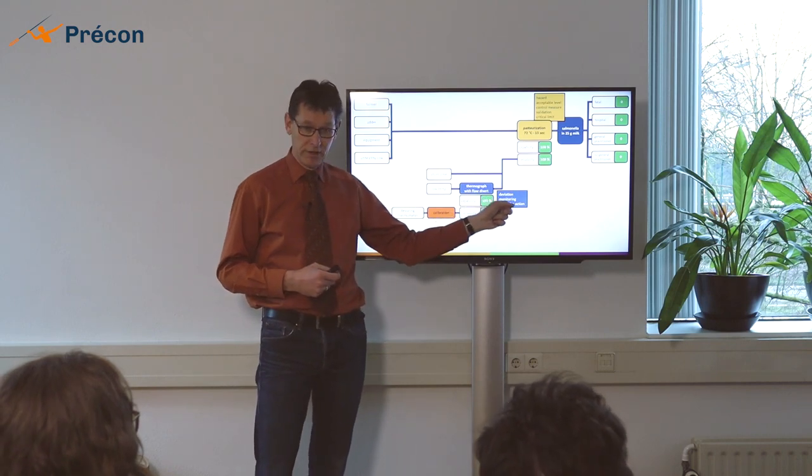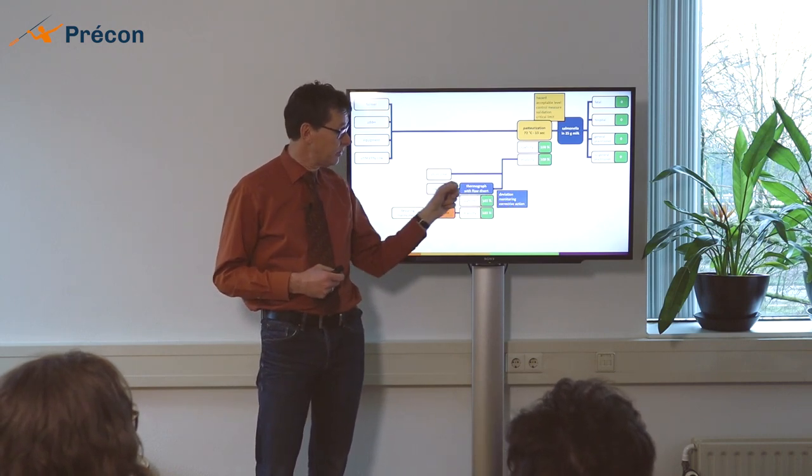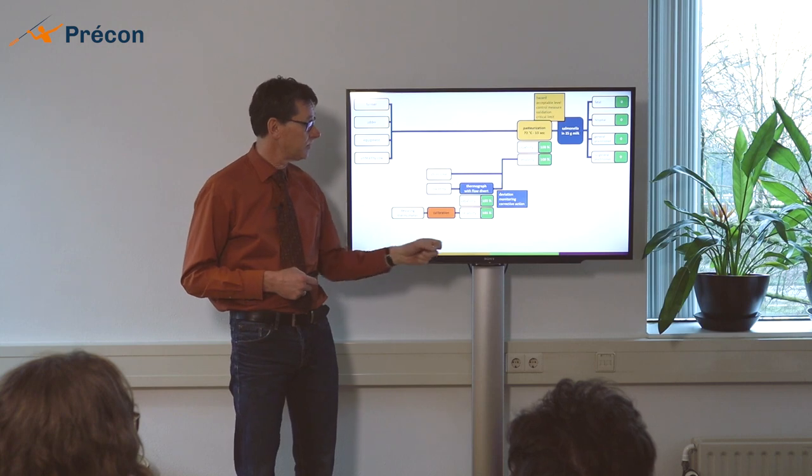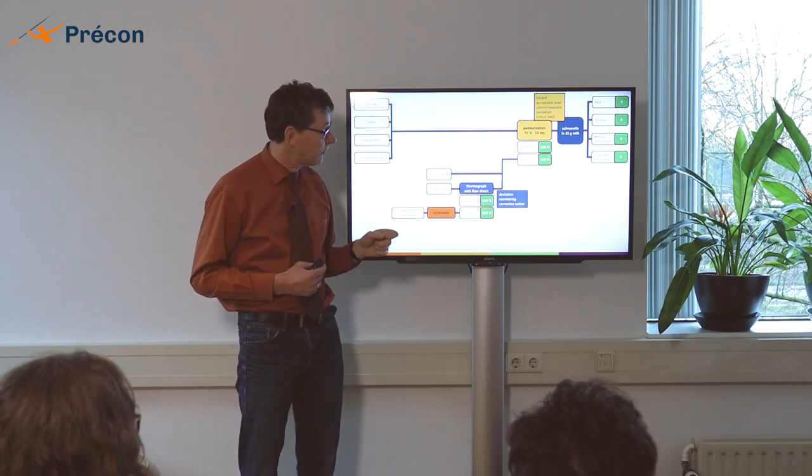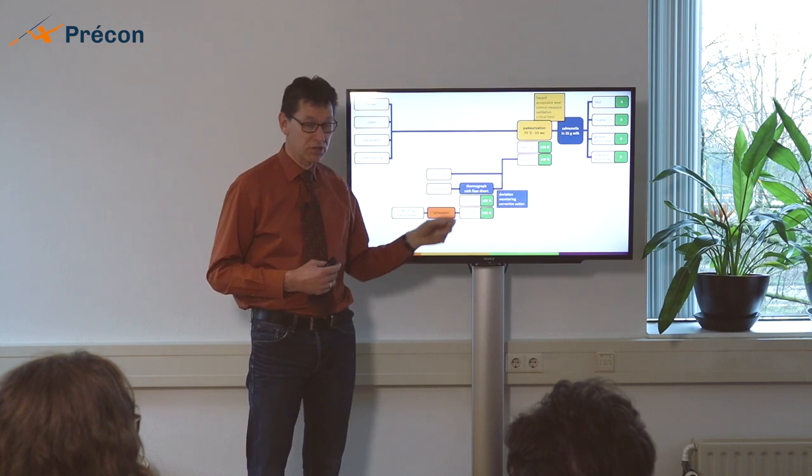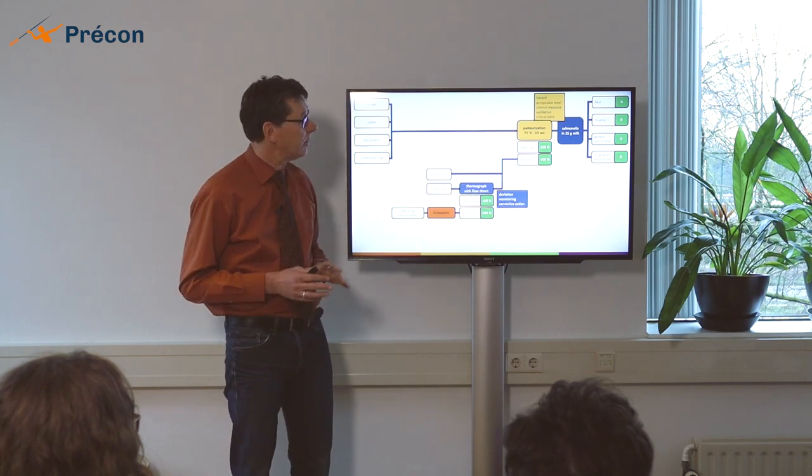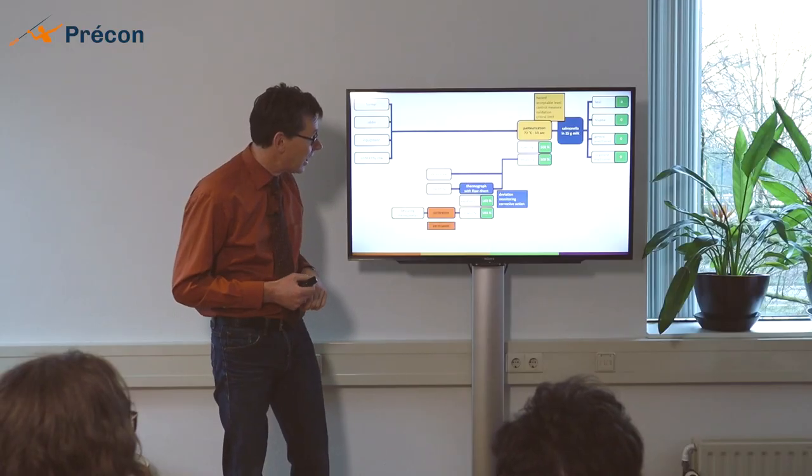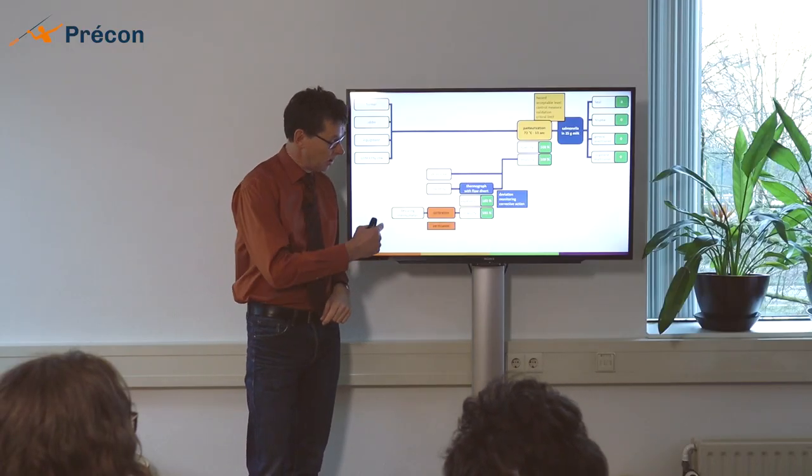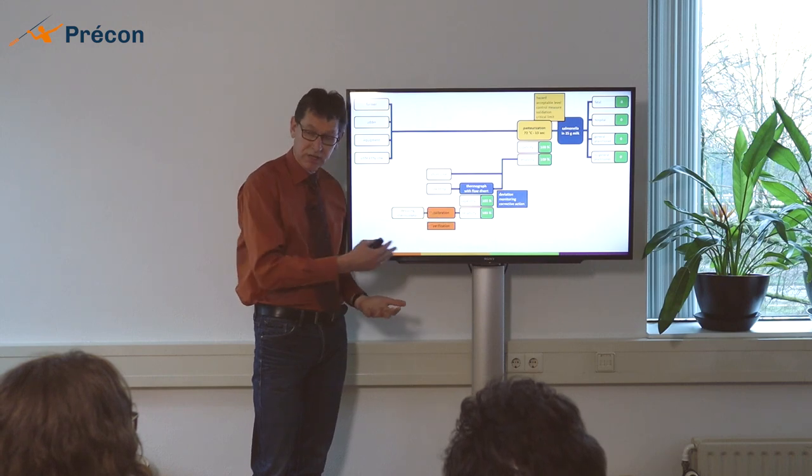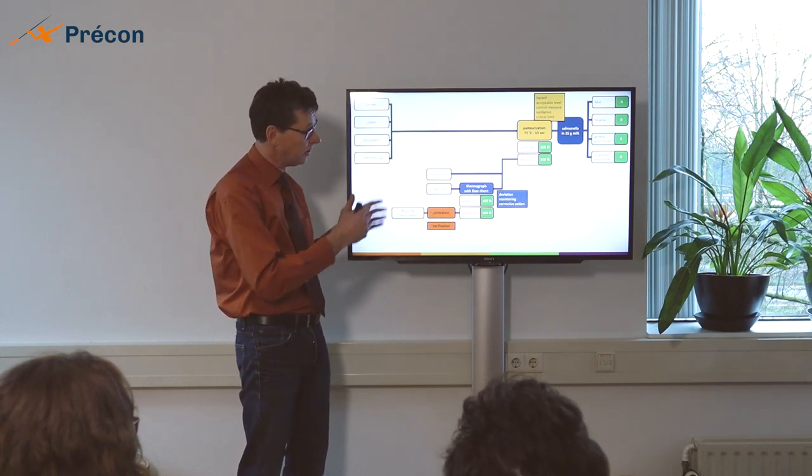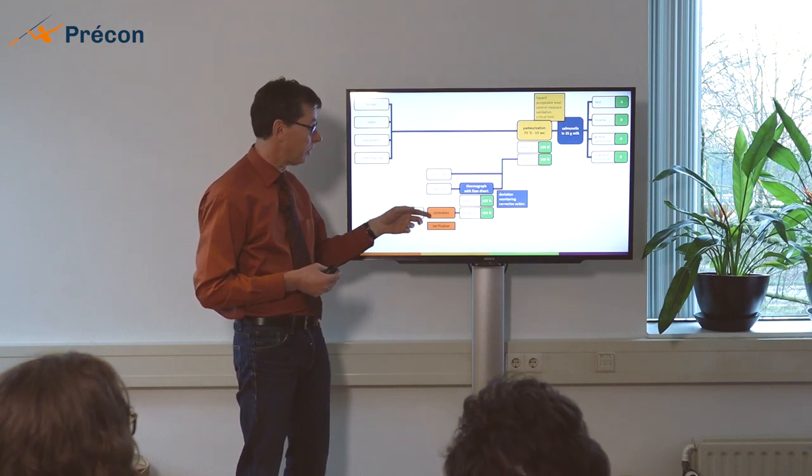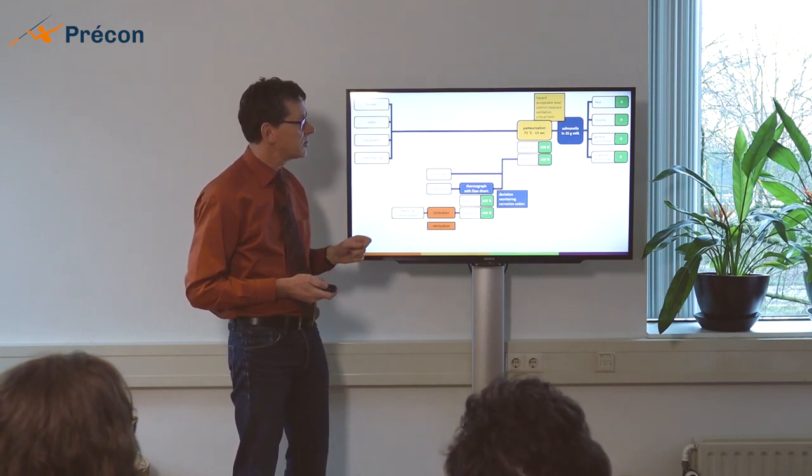Three other definitions are over here. That's the deviation from the critical limit. You need to have monitoring, which is the thermograph. And you have to have a corrective action, which is in the flow divert. So here is eight of the definitions that you need to understand. The number nine is in verification. And calibration can be seen as a part of verification. Verification can be on other places in the model as well. But one important place is over here. So that's number nine.